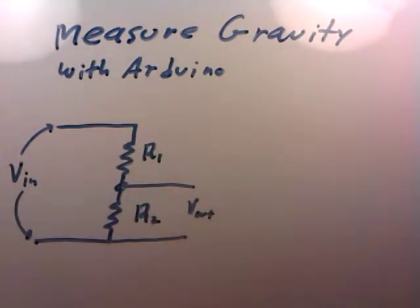That's right. The Earth has a certain acceleration due to gravity, which is 9.8 meters per second per second, and we're going to measure that. I'll show you how.